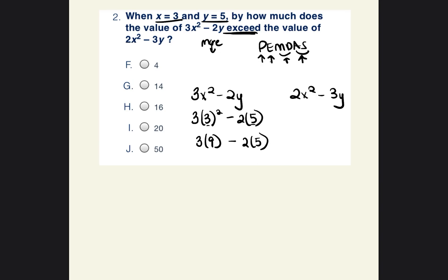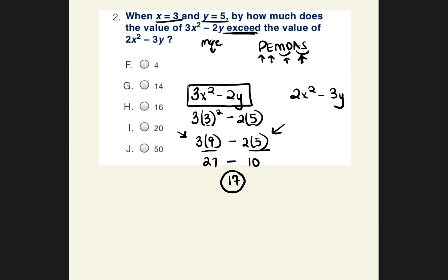We did exponents; now we multiply or divide. 3 times 9 is 27. Bring down the minus sign. 2 times 5 is 10. We didn't subtract yet because multiplication comes first — we had to multiply 3 times 9 and 2 times 5. Now 27 minus 10 is the next step for adding or subtracting. 27 minus 10 is 17. So 3x squared minus 2y equals 17.